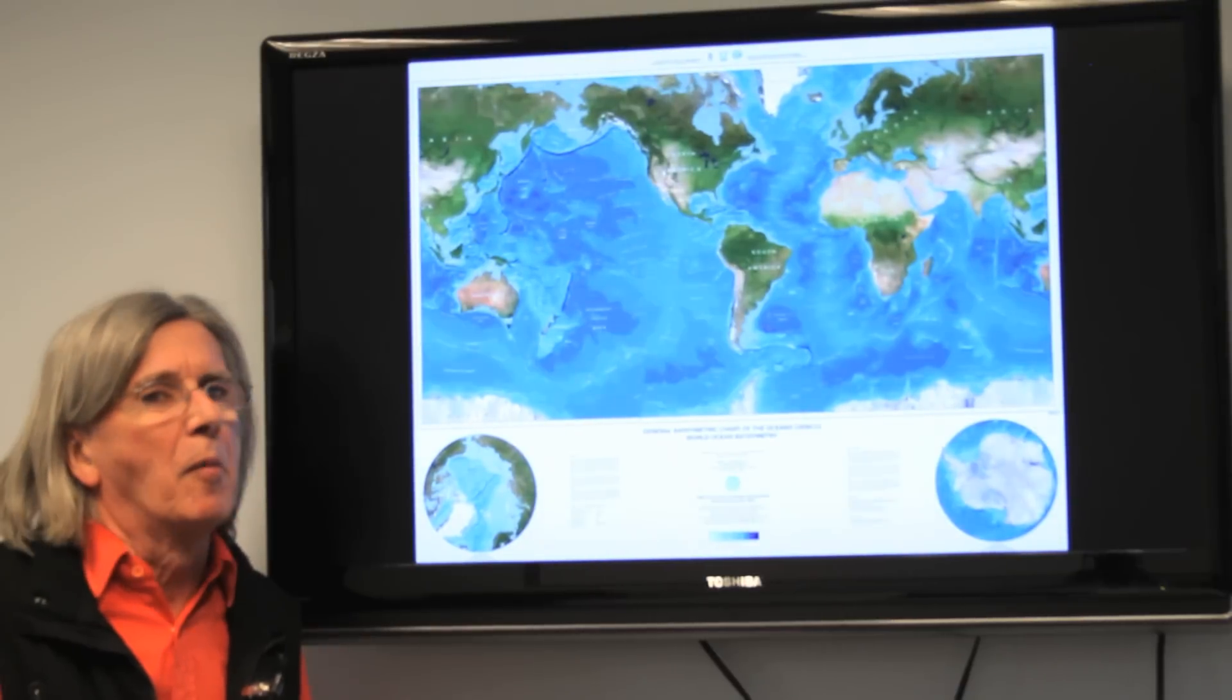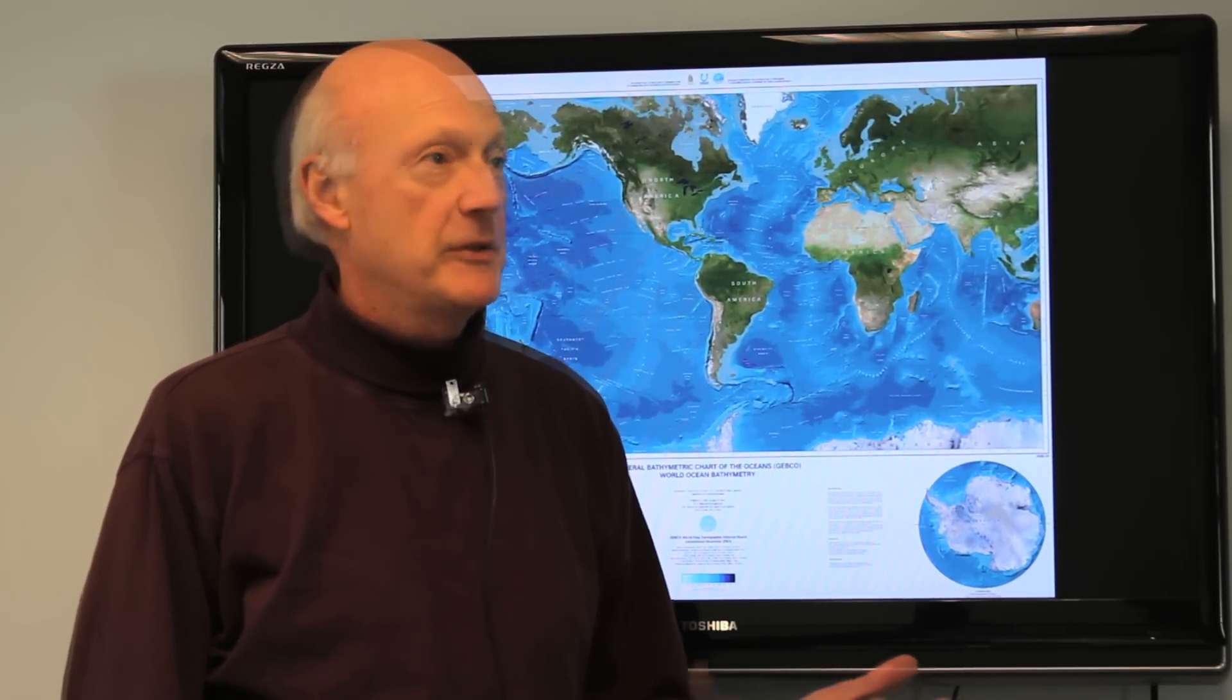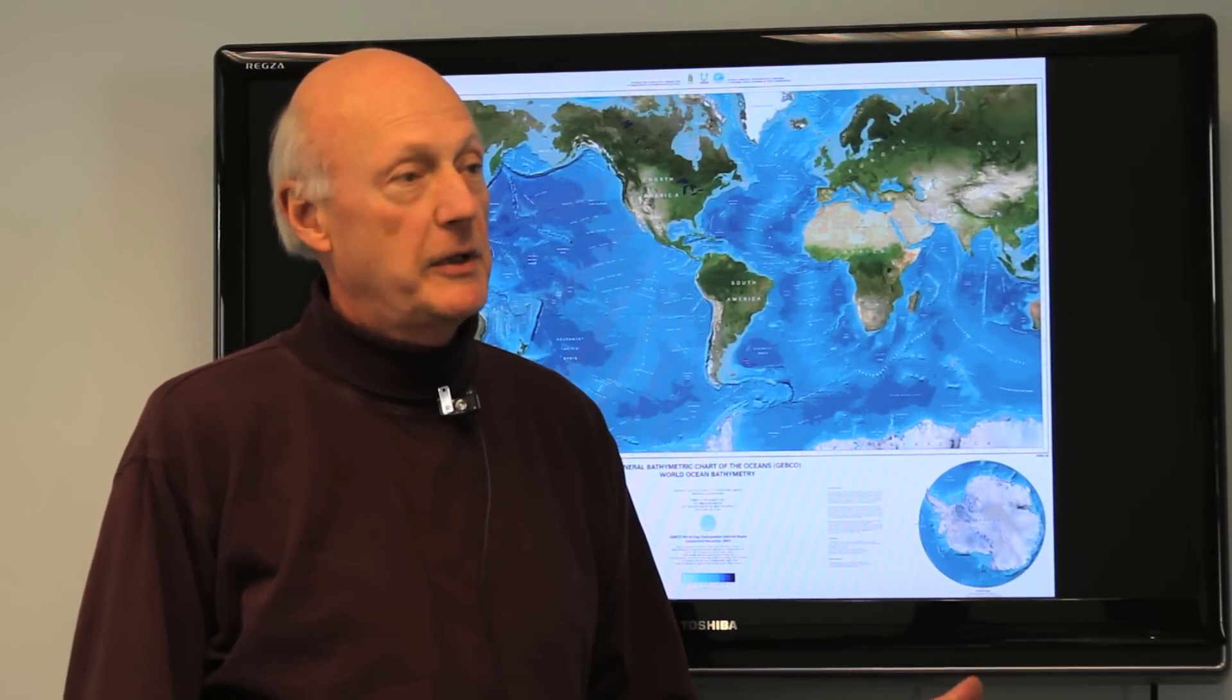We think we've probably actually measured about 10%. And so we have a general idea of the shape of the ocean basin. And we have very small areas of the ocean that are mapped very well. Ultimately, we need to have the entire ocean mapped very well.